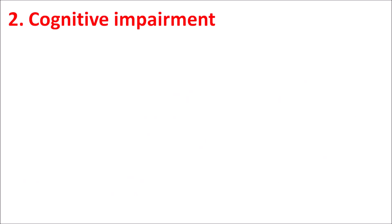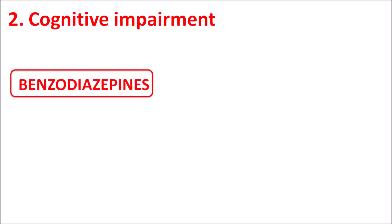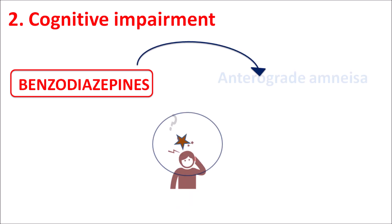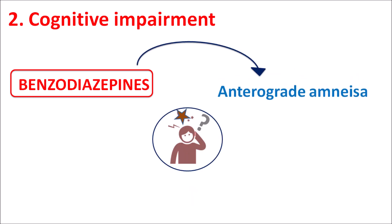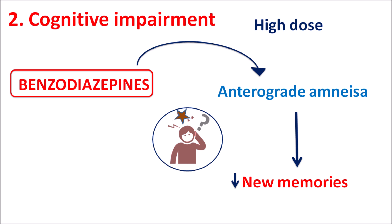The second group of side effects is cognitive impairment. Benzodiazepines can reduce memory, producing anterograde amnesia — the loss of memory for upcoming events. In these patients, there is a decreased ability to form new memories, so memories of upcoming events are not stored. Again, this side effect is more troublesome in elders and is more pronounced with high doses as well as intravenous administration.